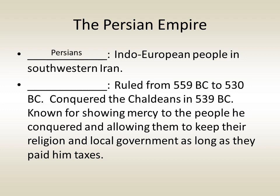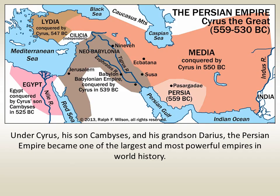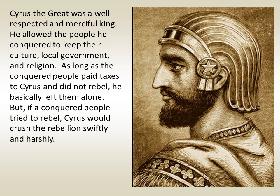The Persians were an Indo-European people in southwestern Iran. One of their best-known rulers was Cyrus, who ruled from 559 BC to 530 BC. He conquered the Chaldeans in 539 BC and was known for showing mercy to the people he conquered, allowing them to keep their religion and local government as long as they paid taxes. Cyrus essentially left conquered peoples alone unless they rebelled, in which case he would crush the rebellion swiftly and harshly.